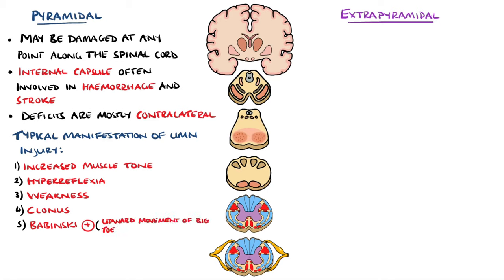The reason Babinski's sign is used is because normally, stimulation of the S1 dermatome — that is, the lateral plantar aspect of the foot — causes stimulation of the S1 myotome, which contracts the plantar flexors, causing a downward movement. However, if the corticospinal tract has a lesion, then there is a spread of this sensory input from the S1 dermatome to the L4 and L5 horn cells, which then fire and cause contraction of the extensors, causing an upward movement of the big toe.